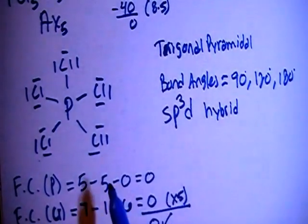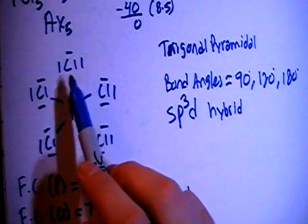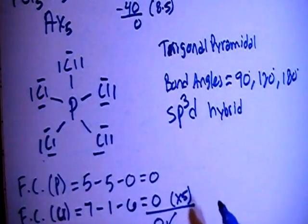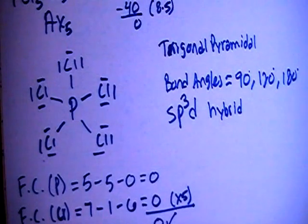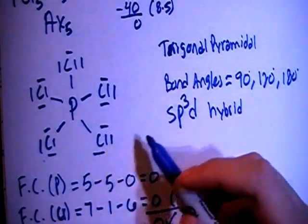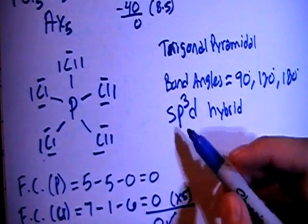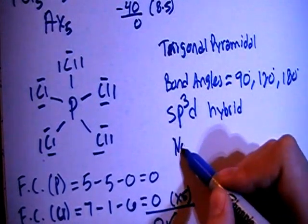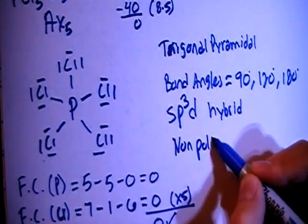In this case, because all the surrounding atoms are chlorines, they're all going to cancel each other out in terms of dipole moments, meaning that this PCl5 phosphorus pentachloride is going to be non-polar.